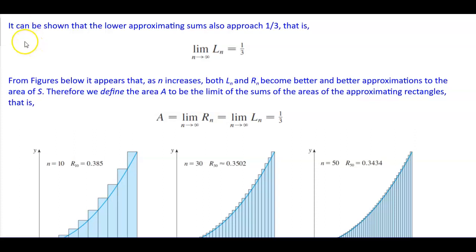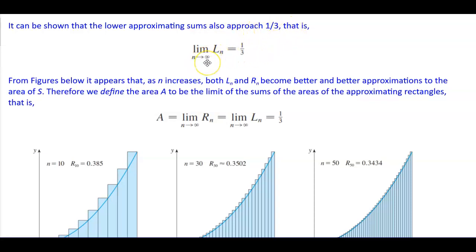From Example 2, it can be shown that the lower approximating sums also approach 1/3. That is, the limit as n approaches infinity of L subscript n is equal to 1/3.